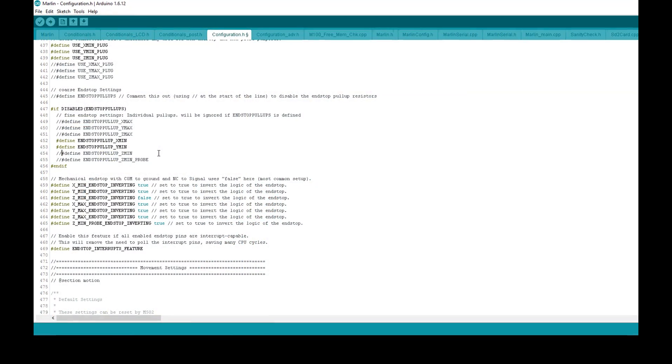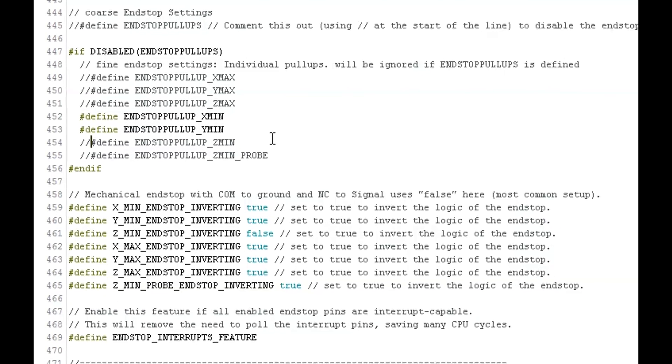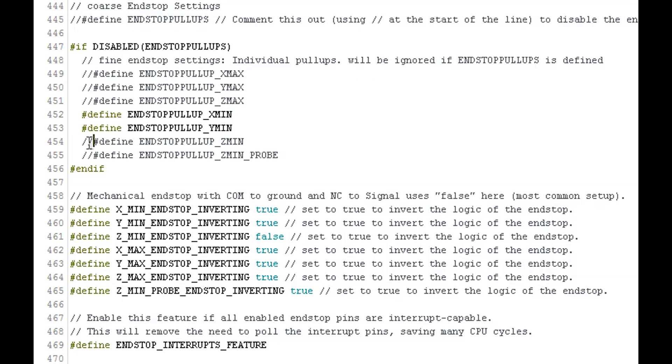In Marlin, in the configuration.h file, for this PNP inductive probe, we don't need to worry about enabling the pull-up resistor inside the Arduino, as there's already a 10k pull-down resistor inside the probe. However, I've tried both ways. The probe will work if the pull-up resistor is enabled. What you must check is the logic inverting. As we go high when it sees metal, we don't want to invert the logic, so this is set to false.